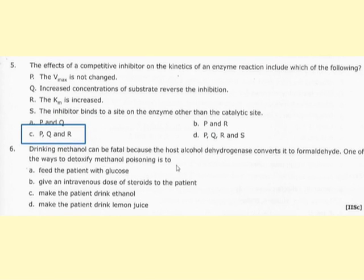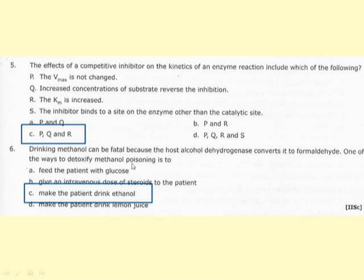Drinking methanol is fatal because alcohol dehydrogenase converts it into formaldehyde. One way to detoxify methanol poisoning is to drink ethanol, which acts as a competitive inhibitor of alcohol dehydrogenase, reversing the metabolism of methanol. This is the basis of methanol detoxification through competitive inhibition. Thank you.